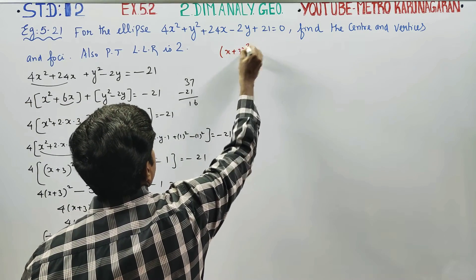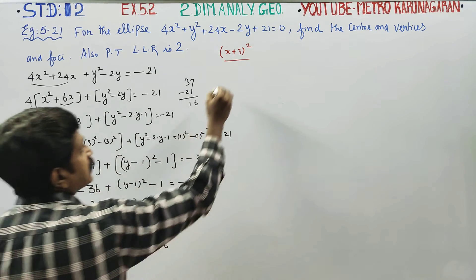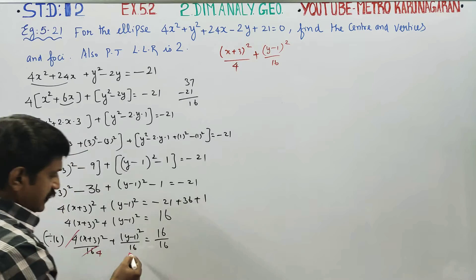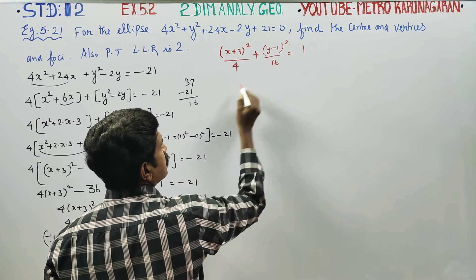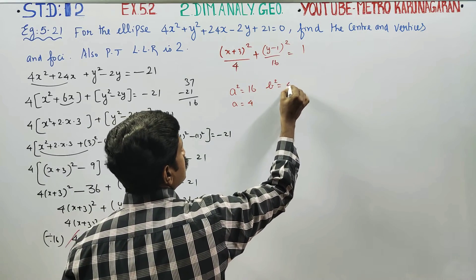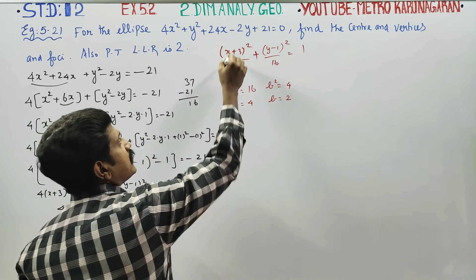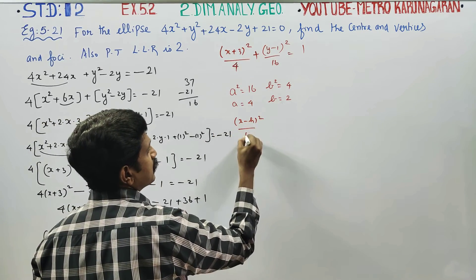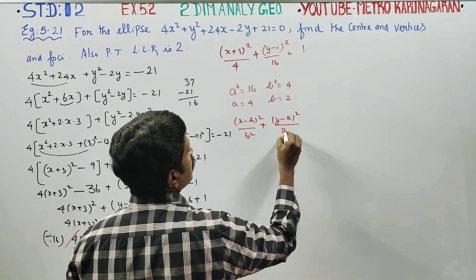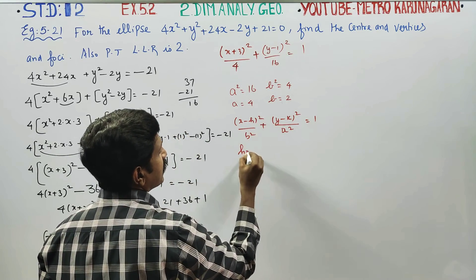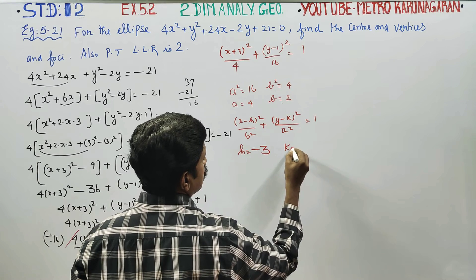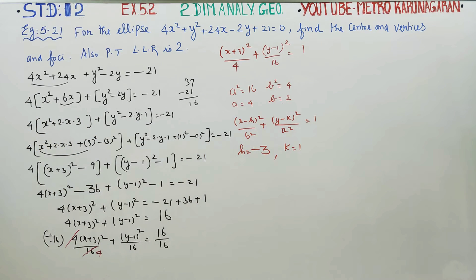From the standard form, the larger denominator is 16 — that is a², so a² = 16 and a = 4. The smaller denominator is 4 — that is b², so b² = 4 and b = 2. It matches the formula (x - h)²/b² + (y - k)²/a² = 1, where the larger value a² is under the y term. From (x + 3), applying opposite sign: h = -3. From (y - 1), same sign: k = 1.